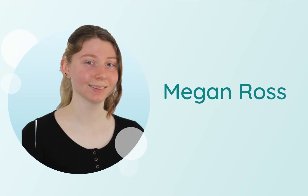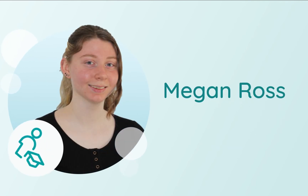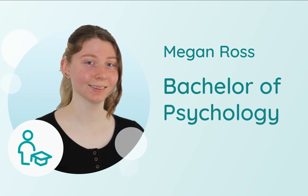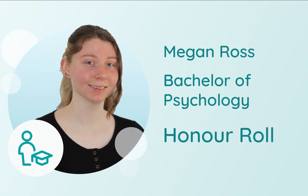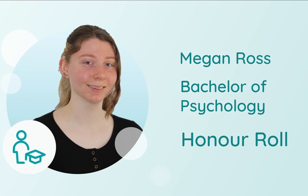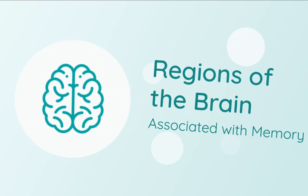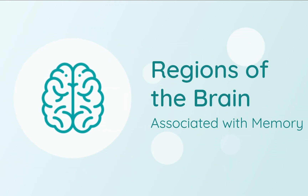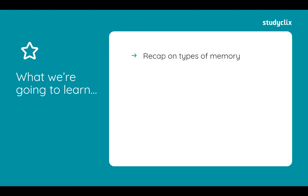My name is Megan Ross and I'm studying a Bachelor of Psychology at Monash University. I was on the VC Honour of Psychology and today we're going to be talking about the different regions of the brain associated with memory. In this video we'll do a recap on the different types of memory, and then go through the four key areas: the cerebral cortex, the hippocampus, the amygdala, and the cerebellum.